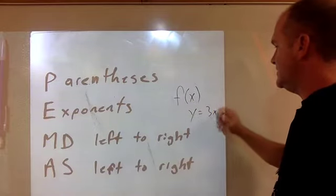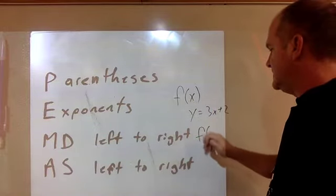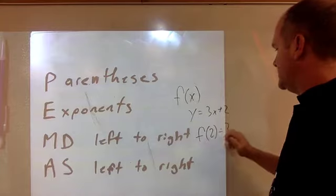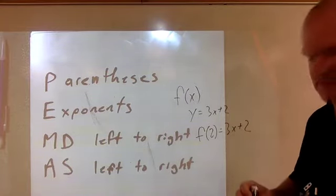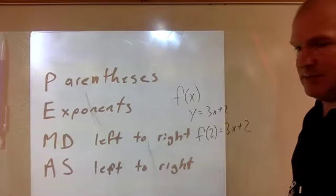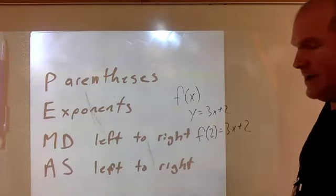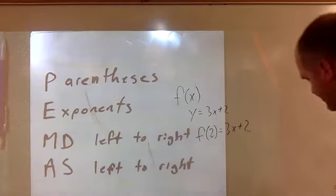...equals 3x plus 2, it'll say f of some number equals 3x plus 2, and then you substitute in that number for x. That's the easy part - anybody can turn that x into this number. The hard part is then solving this side of the equation.